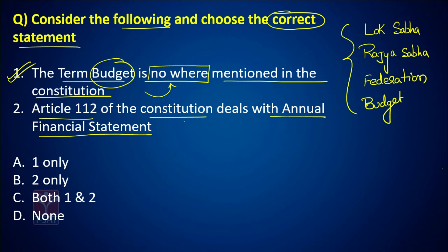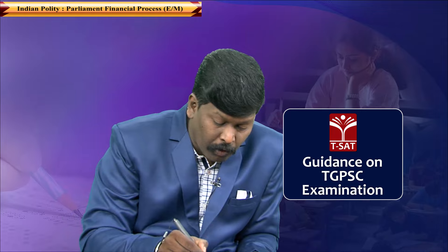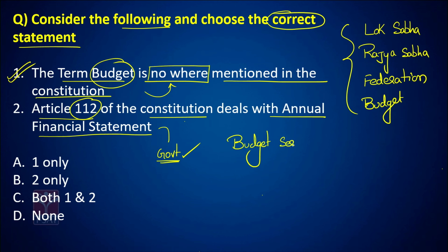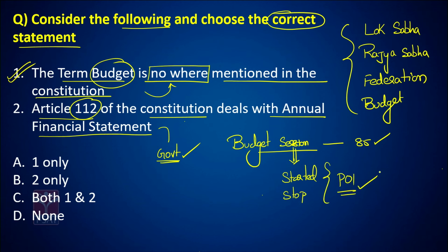There should be some article which deals with the budget, and that is Article 112. Article 112 talks about the annual financial statement of the government. The President of India shall lay down the annual financial statement in the parliament via the budget session. As per Article 85, a session of the parliament can be started or stopped by the President of India only. The answer is C — both statements are correct.